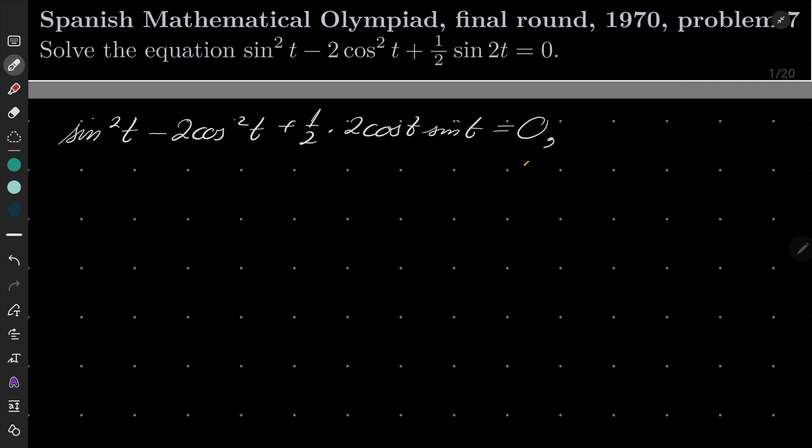Very well, and now after simplification we will get sin²t - 2cos²t + cos(t)sin(t) = 0.